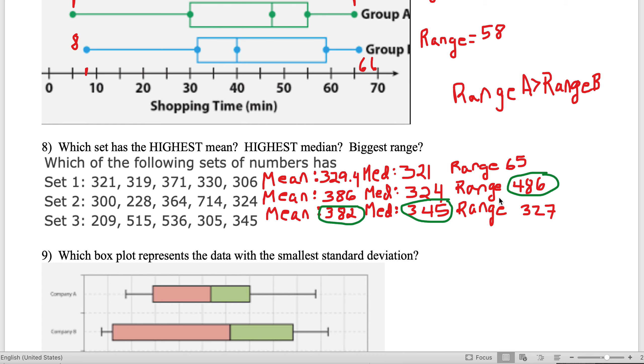On the next one, you're given three sets of data. I ask three different questions: which has the highest mean, which has the highest median, and which has the biggest range? I found all three means—remember, to find the mean, it's the average. Add them up and divide by five.